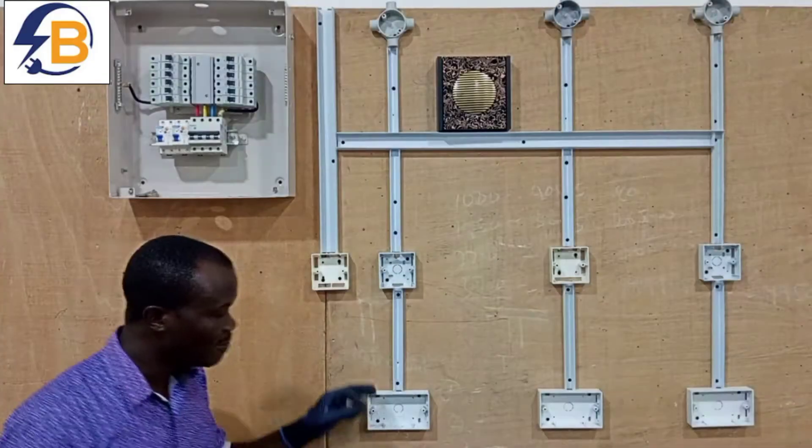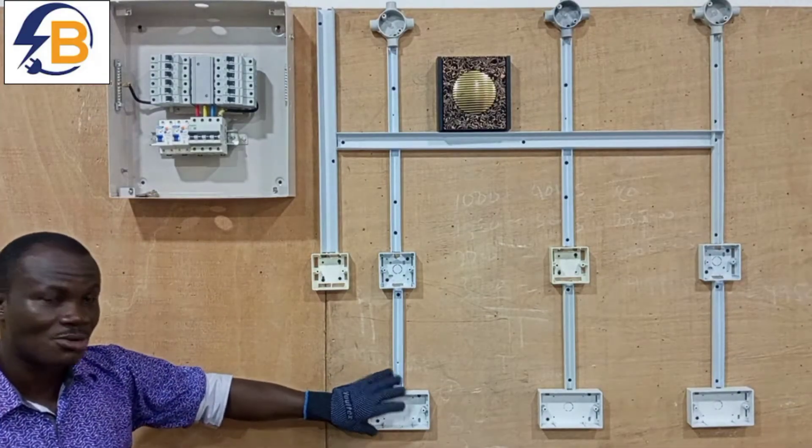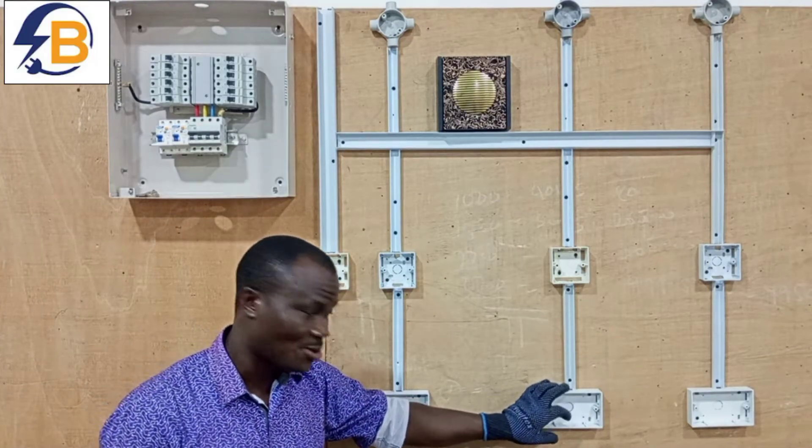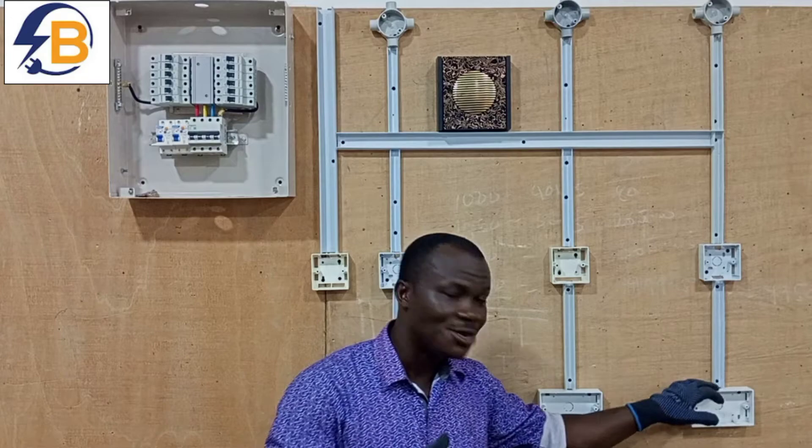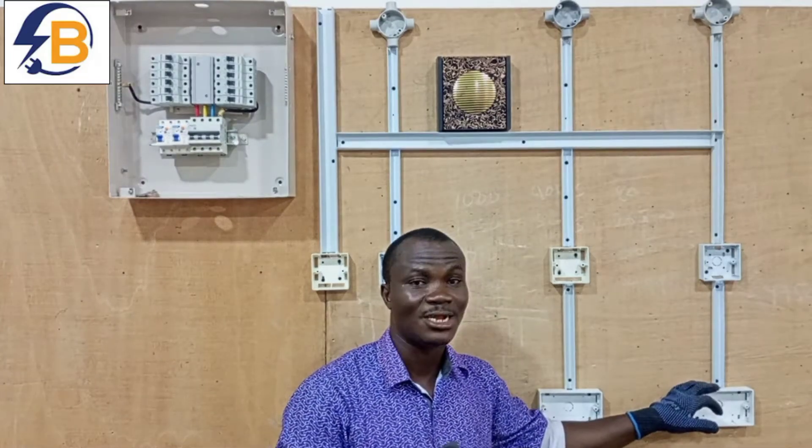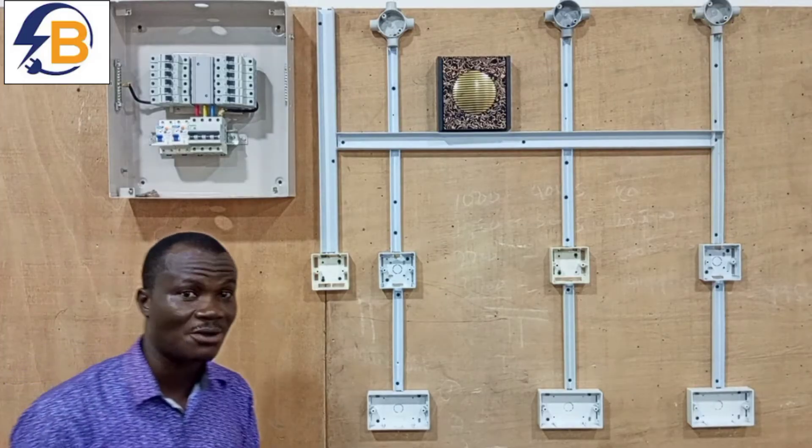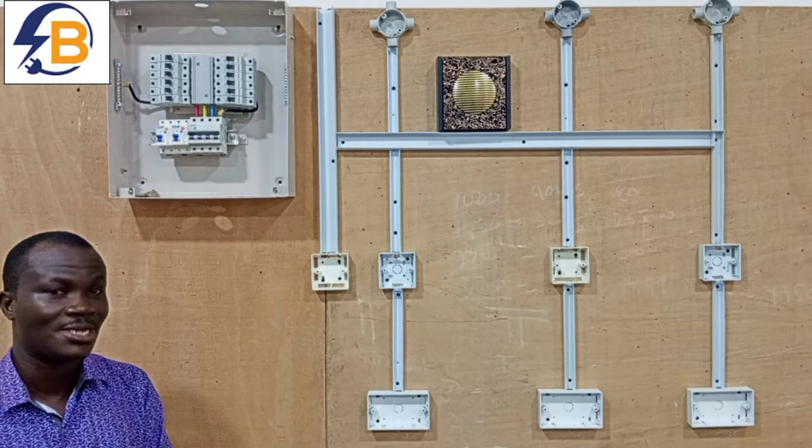At the porch we have one double circuit, in the sitting area we have another double circuit, and then in the room also we have another double circuit. So this is an example of a very simple wiring in a one room facility.